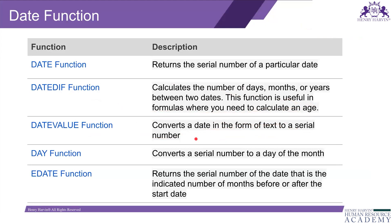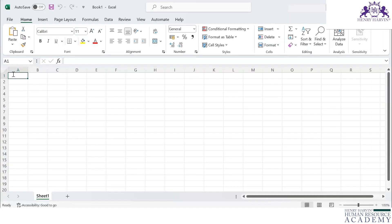The DATEVALUE function converts a date in the form of text to a serial number. This is important when entering account numbers — for example, bank account numbers, which can be very long. If you put an entire large number into Excel, Excel will not display it correctly, so let me show you this in Excel.